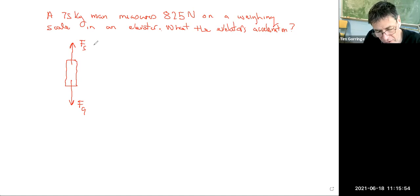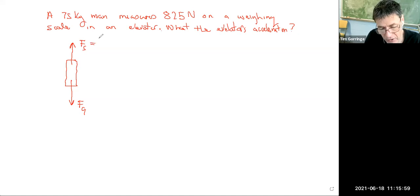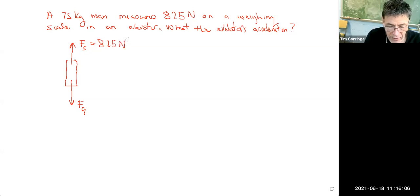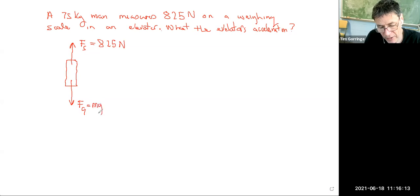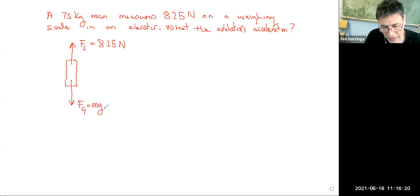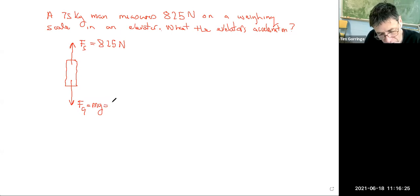In the case of the force of the weighing scales, we're told that the scales read 825 newtons — that's the force they exert. In the case of gravity, we're told the mass of the man is 75 kilograms. If we multiply that mass by the acceleration of gravity, 9.8 meters per second squared, that gives us the force of gravity. I worked that out already — that was 735 newtons.